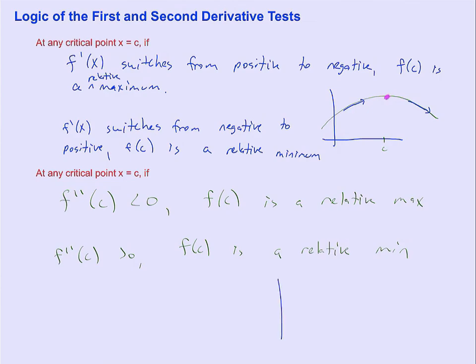because the only way for that to happen, the only way for there to be a critical point meaning f prime of c is equal to 0,